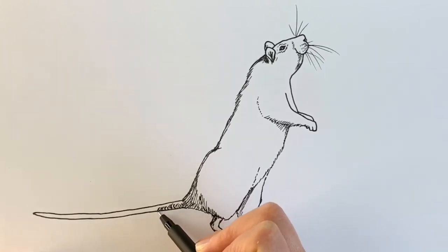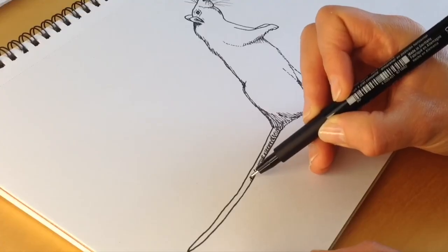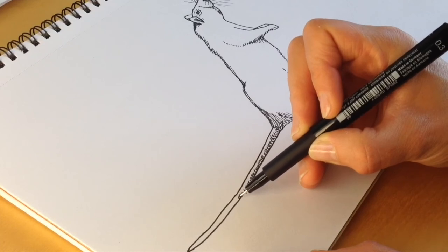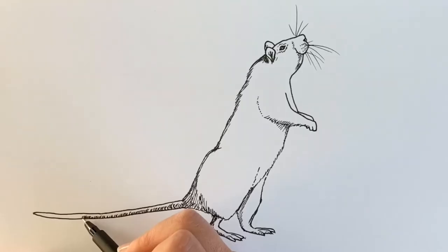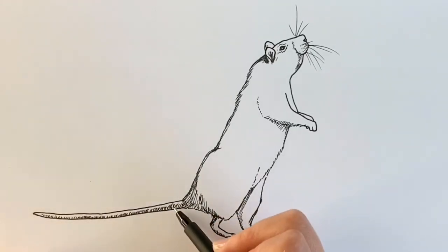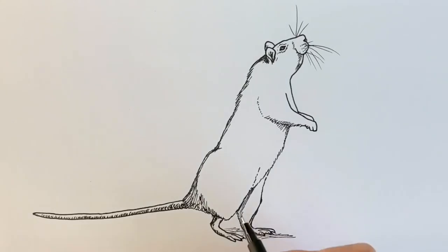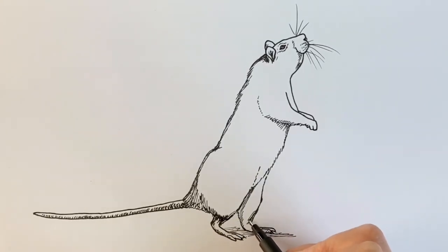Getting smaller and smaller towards the tip of the tail, all the way along. And then, last but not least, we've got to add some ground, some shadow underneath here. Also, I'm just going to make this a little bit more furry down here.